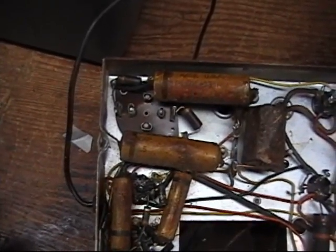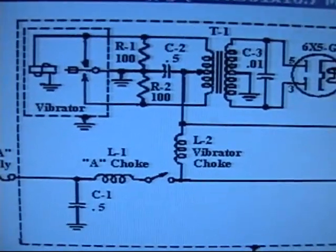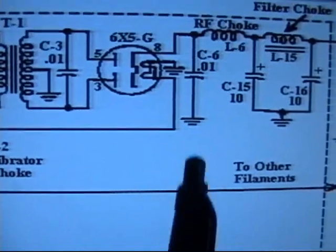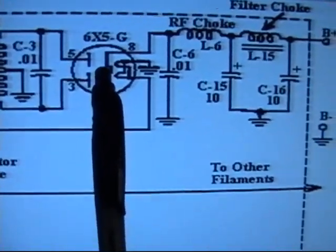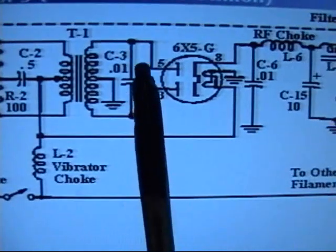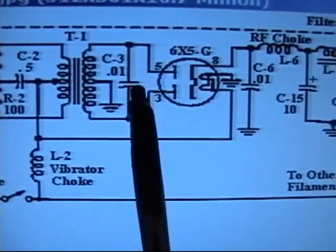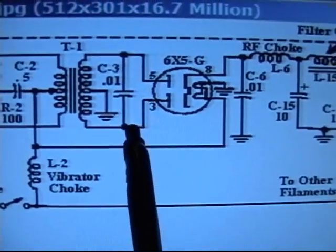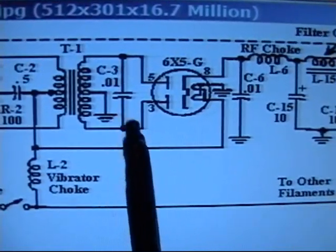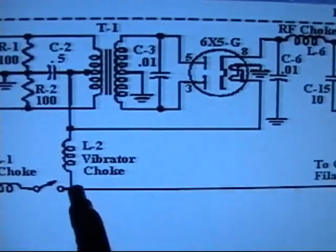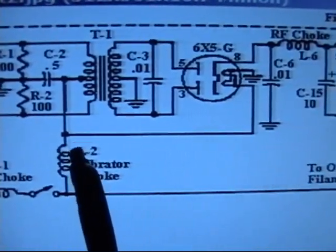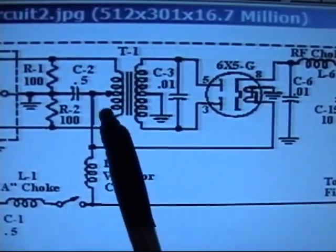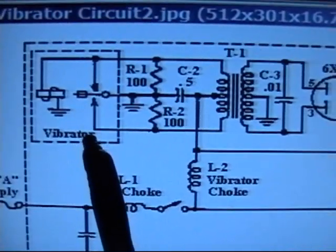Here is your complete vibrator circuit with the rectifier tube, your filter caps, your buffer capacitor which is right here, which eliminates most of the hash as well as protecting the contacts on the vibrator. This is a hash filter here. Together with this, eliminates a lot of the hash that the vibrator normally would produce.